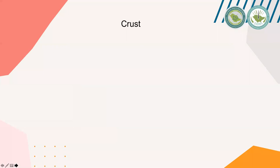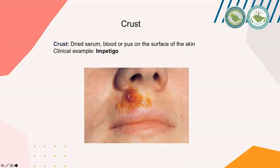We will start with crust. A crust is dry serum, pus, or blood on the surface of the skin. A clinical example is impetigo, a skin condition caused by an infectious agent — usually Staphylococcus aureus — causing these dry honey-colored crusts over the upper part of the lip and also involving the right nostril.